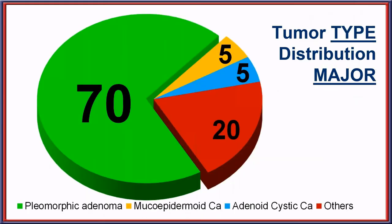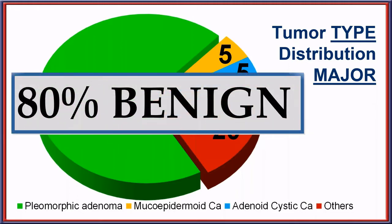For the major salivary glands, pleomorphic adenoma and others like canalicular adenoma, basal cell adenoma, and oncocytoma account for about 80% of tumors. So when you're in a major salivary gland, just remember that 8 out of 10 times it's going to be a benign diagnosis. There may be biases at referral or major oncology centers, but in general practice, 8 out of 10 times it will be benign in major salivary gland locations.